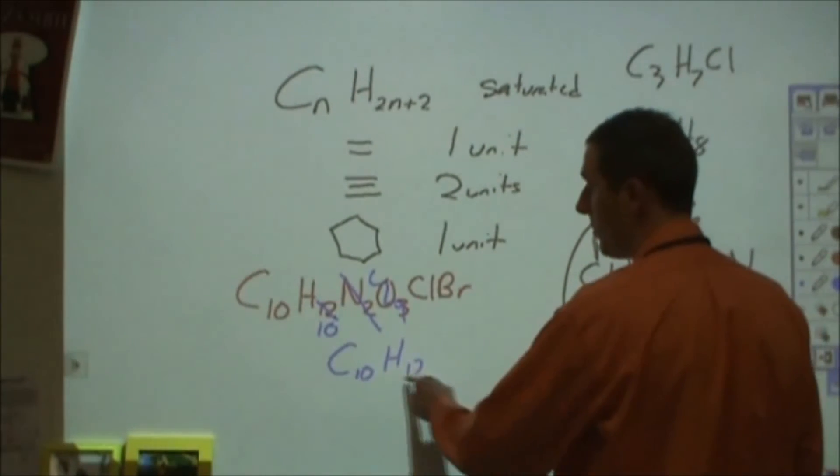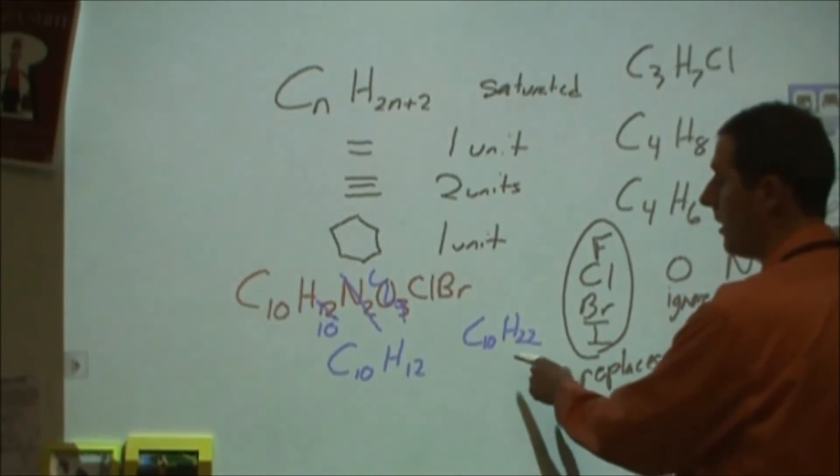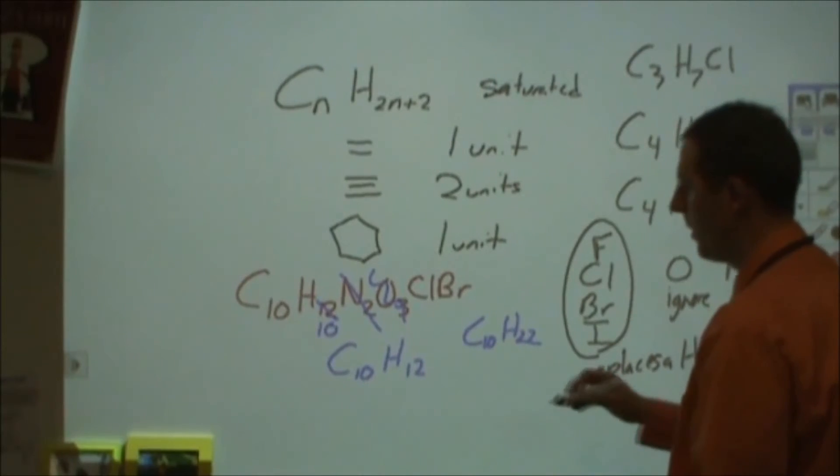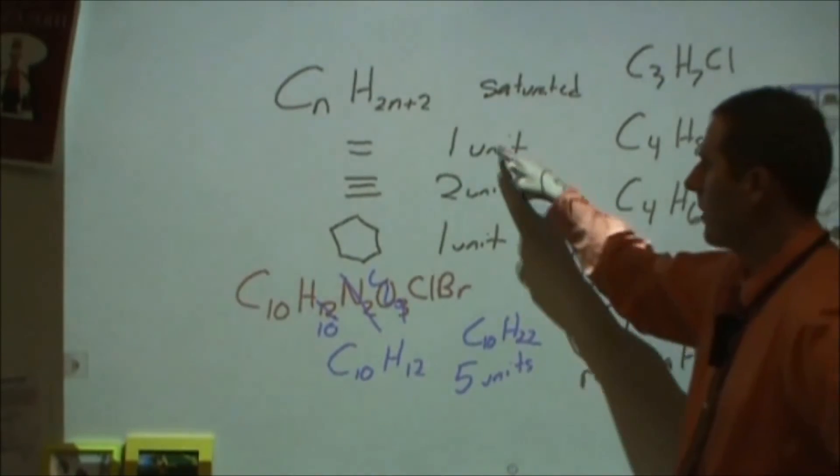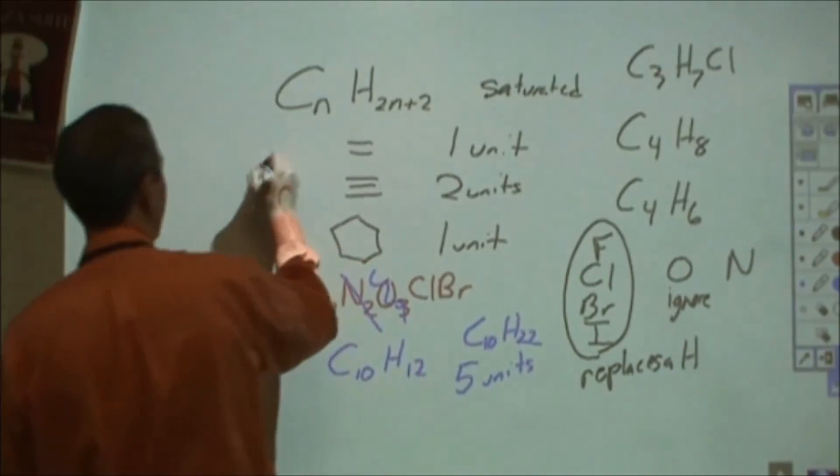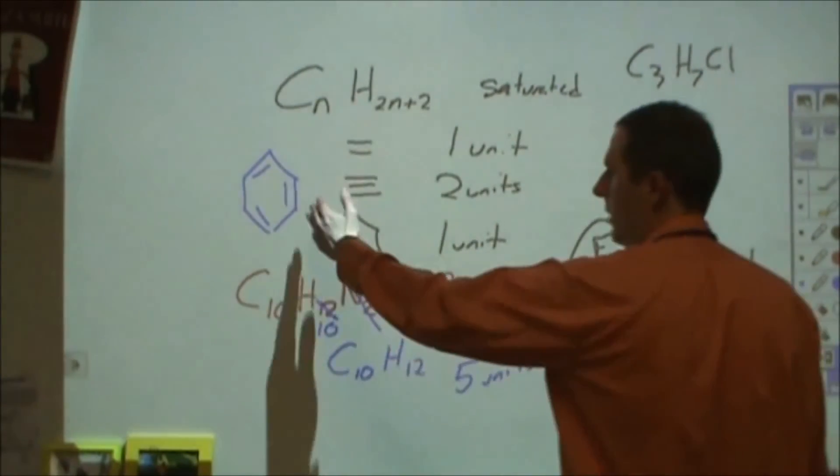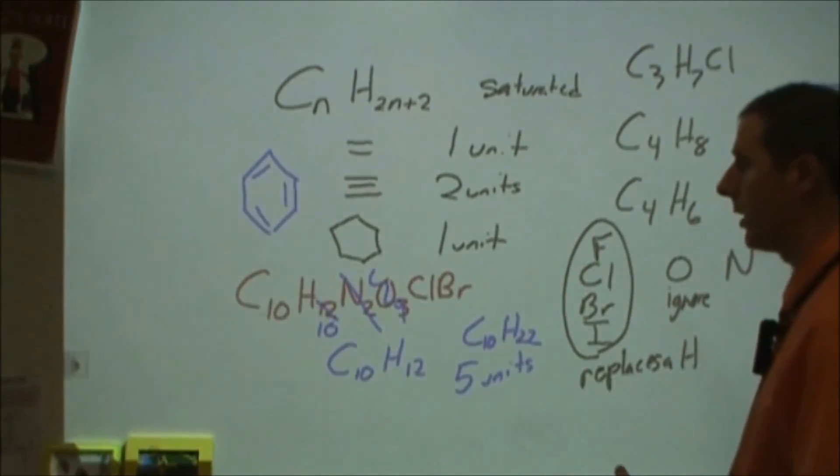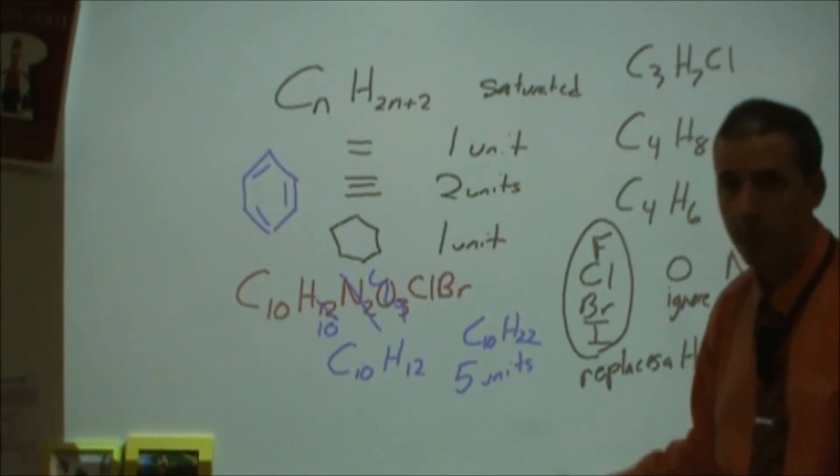Then I would go through and say, C10 should be H22 if they were saturated. I'm off by 10 hydrogens, and every two is a unit of unsaturation. So this would have five units of unsaturation. So some combination of these that totals up to five. Now at that point, when you get above four, you probably are looking at some type of aromatic ring, like a benzene or phenol. And maybe there's a nitrogen in there or something else. In the case of five units of unsaturation, it's very difficult to do that without a benzene ring. So that's likely what you're seeing at that point. So that's how you go through and do your units of unsaturation.